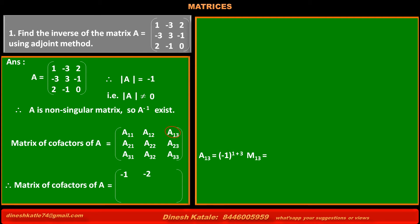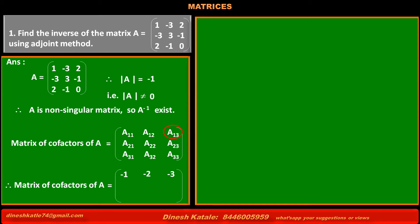A13 is the cofactor of the element at first row, third column, equal to (-1) raised to 1+3 into its minor M13. That is (-1) raised to 4, positive 1, into the minor with elements -3, 3, 2, -1. Solving: (-3 into -1) minus (2 into 3) equals 3 minus 6 equals -3. So the value of cofactor A13 is -3.